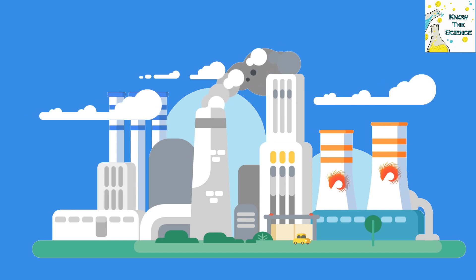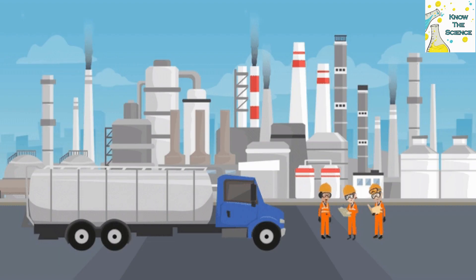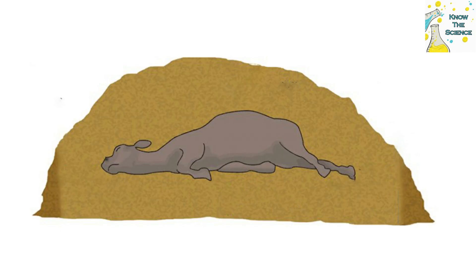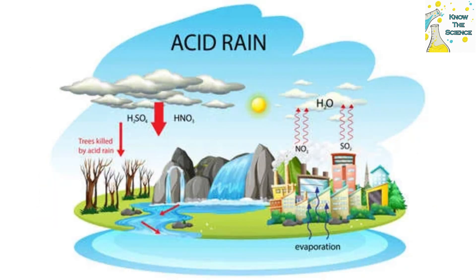Human activity also accounts for half of nitrogen oxide emissions, due to gases produced by motor vehicles. Additionally, although to a lesser extent, intensive livestock farming produces ammonia from the decomposition of organic matter.